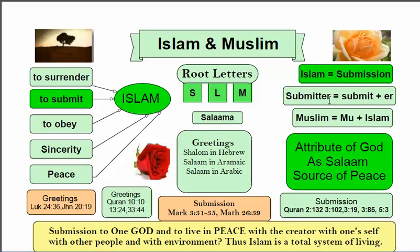In English we use the suffix '-er' to make a noun — so the one who submits to God is called a 'submitter.' In Arabic, we use the prefix 'mu-' before the verb, so mu- plus Islam becomes Muslim — the one who submits to God. Submission is the religion, and the person who submits to God is called a submitter or a Muslim.